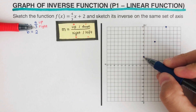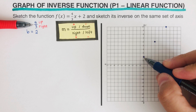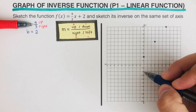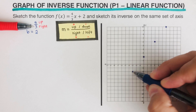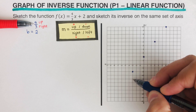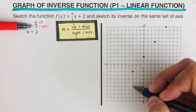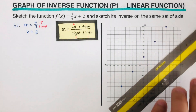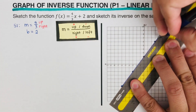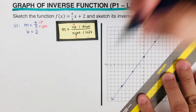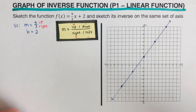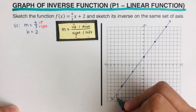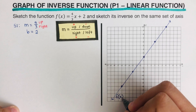On the other side we do the opposite: 4 down and left 3, then again 4 down and left 3. We then sketch the line and label it as our f(x).